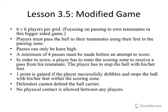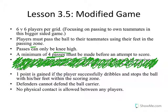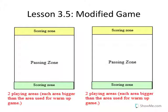After about 10 minutes of dribbling practice, I get them to play a 6v6 game. They pass the ball using feet only in the passing zone — no high balls — with a minimum of four passes to recap passing technique. A point is gained when a player successfully dribbles into the scoring zone and stops the ball with their feet. Defenders cannot pressure the ball carrier, and no physical contact is allowed. This is how the scoring zone looks.